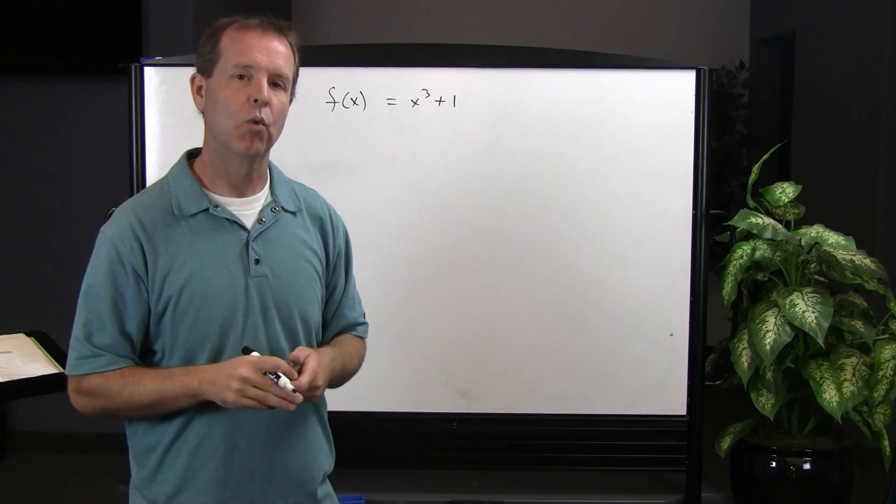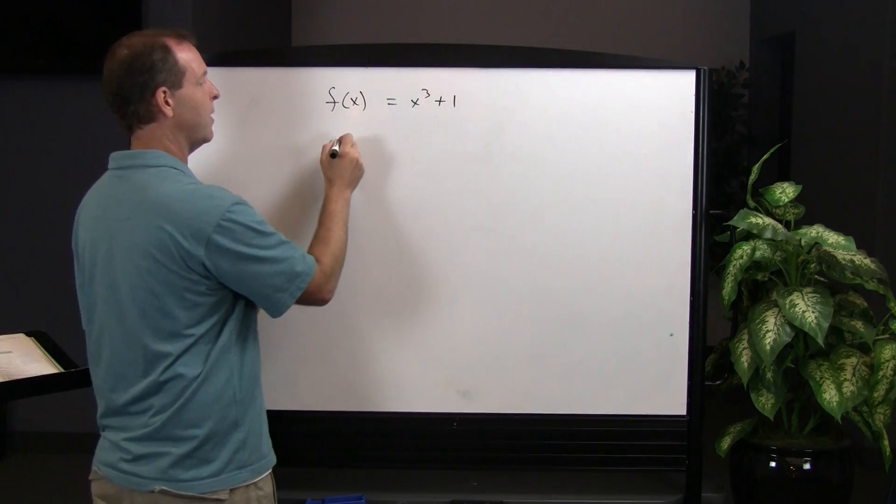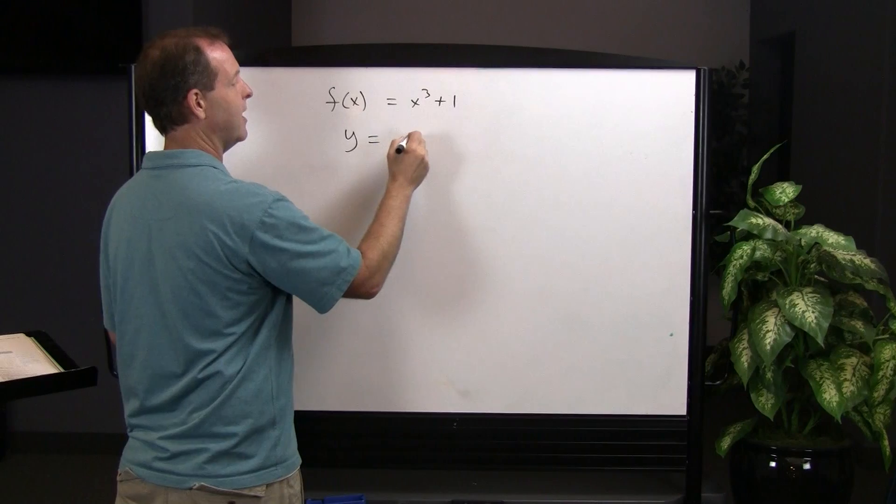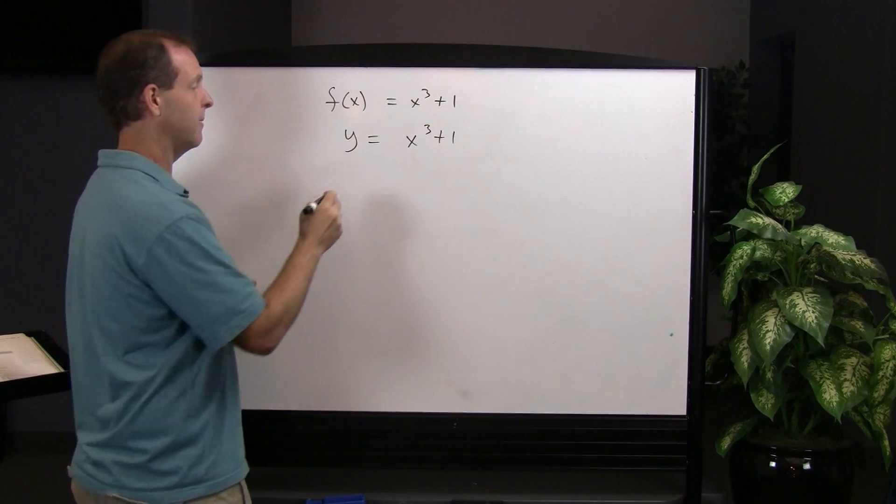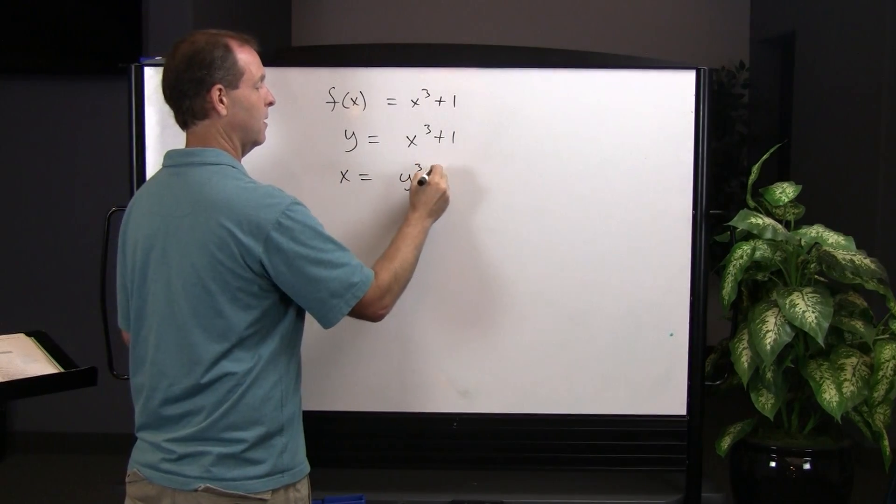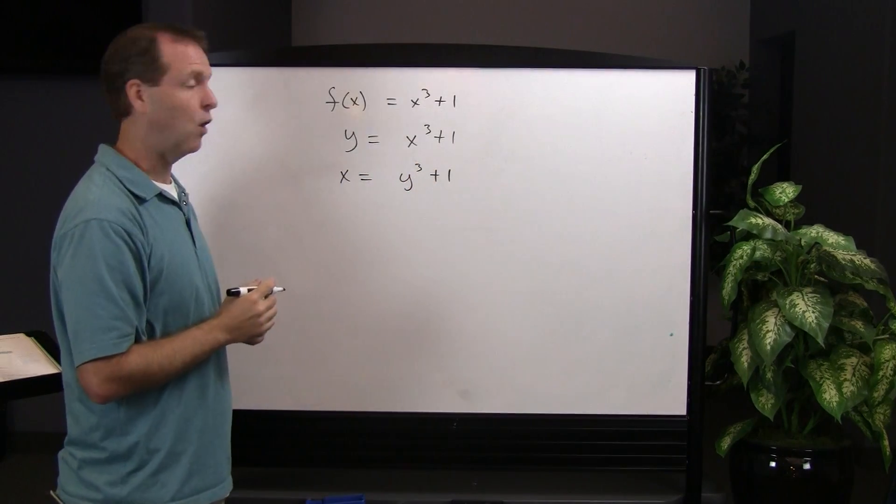It undoes what we originally tried to do. And so the procedure for doing that was rewrite it as y equals x cubed, interchange the variables x equals y cubed plus 1, and then solve for y.